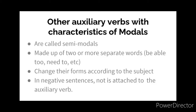Unlike modals, semi-modals often change their form according to the subject and may have a full range of tenses. For example, 'We were able to get in to see the film' — if we replace 'we' with 'I,' the form changes to 'I was able to get in to see the film.' The semi-modal form also changes with tense — converting from present to past tense will change the semi-modal form accordingly.